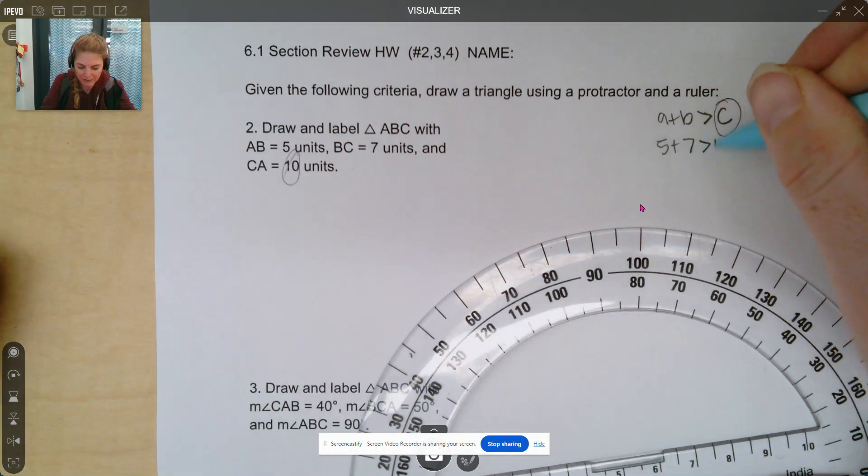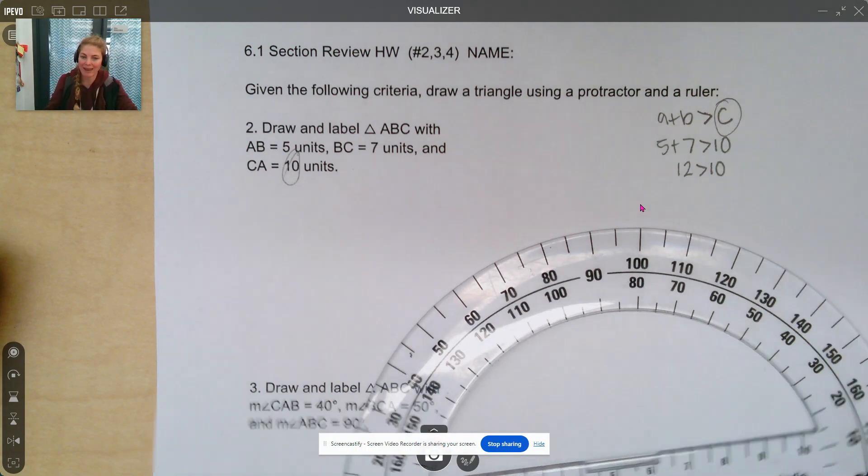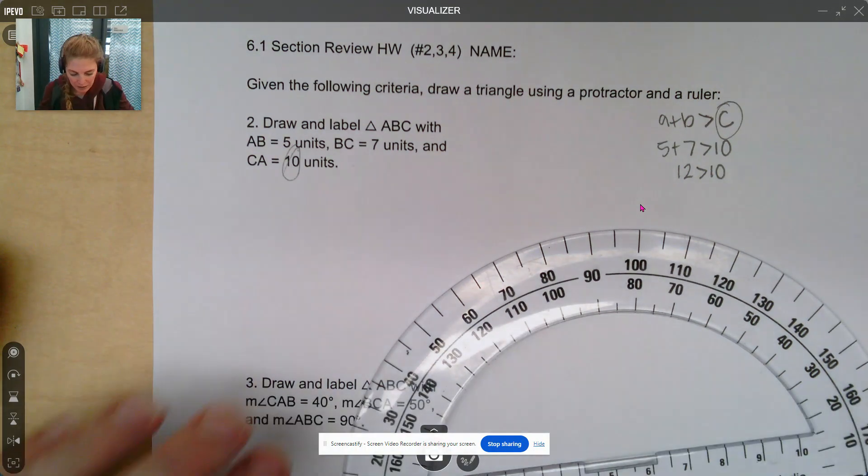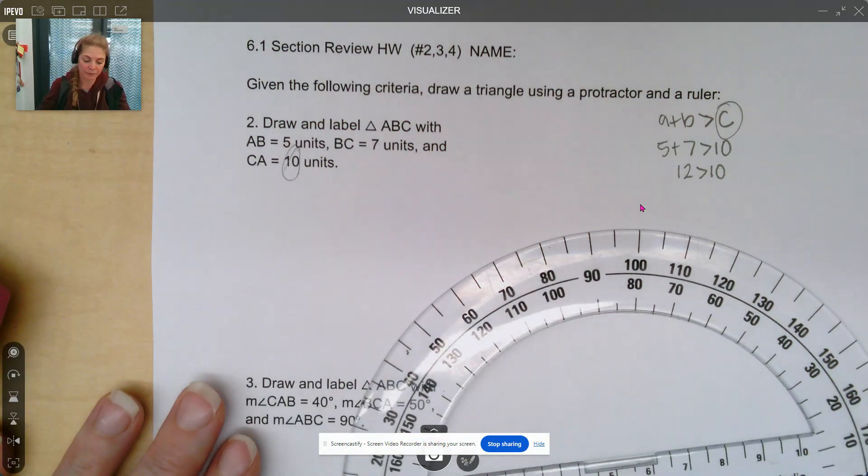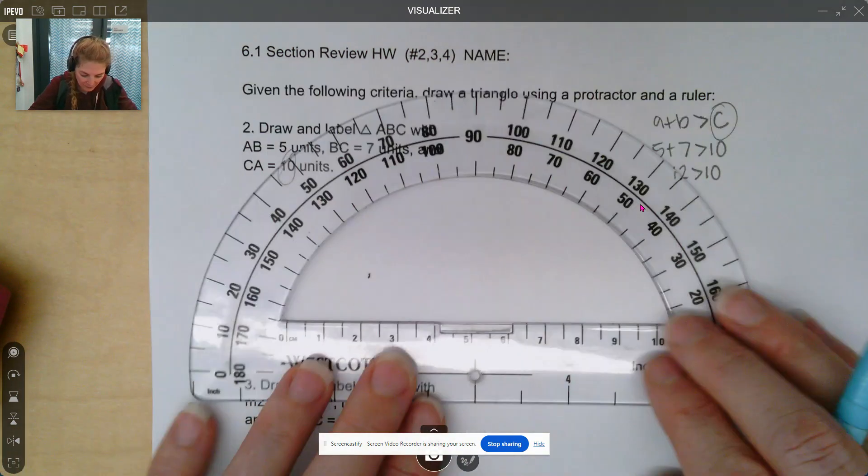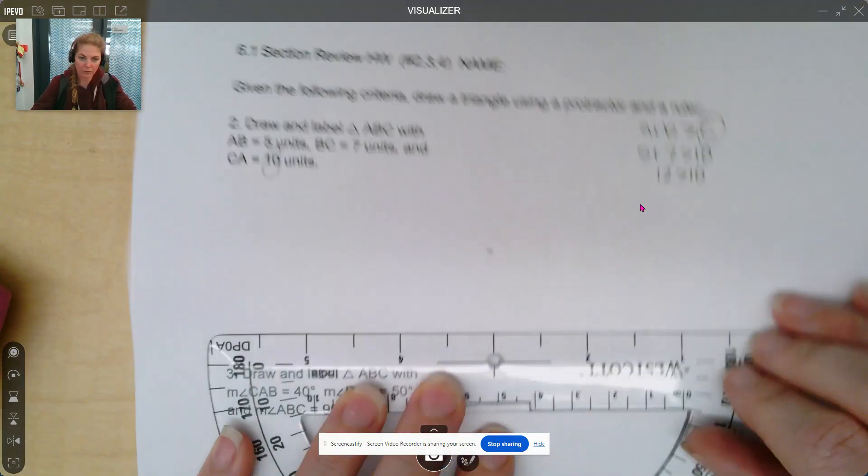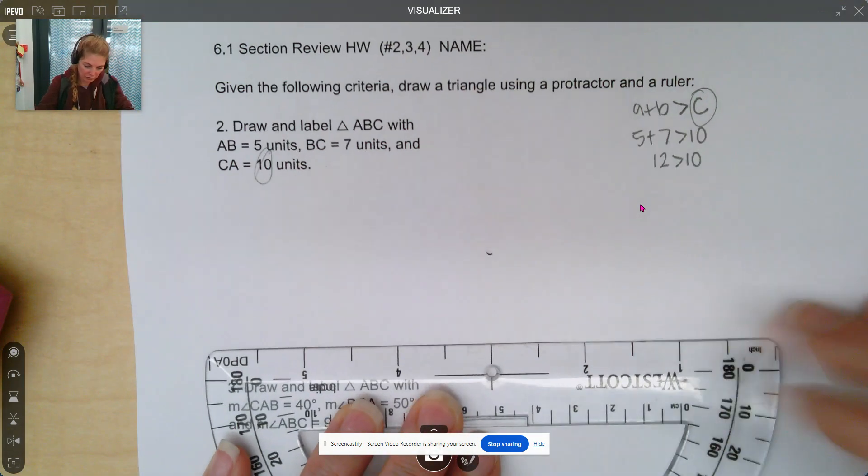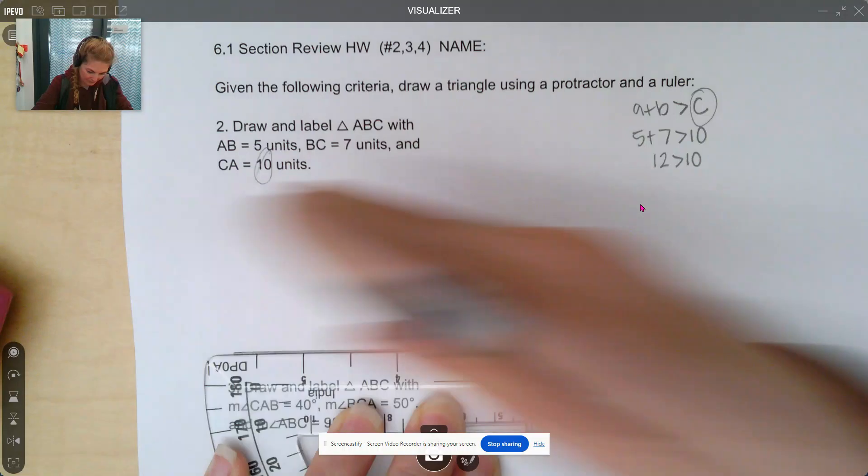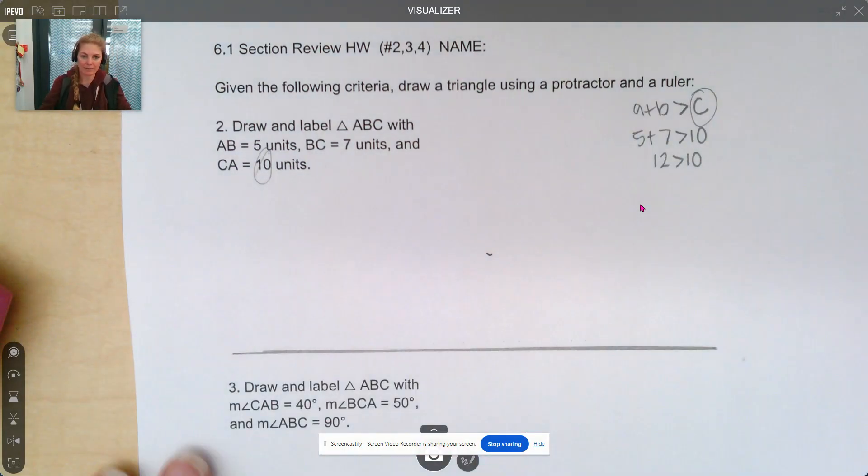5 plus 7, is that greater than 10? Well, it is 12 is greater than 10. So we know we can make a triangle out of this. The question is, how? So first things first, what I'm going to do is I'm going to draw one nice long line, and then from that build my triangle.